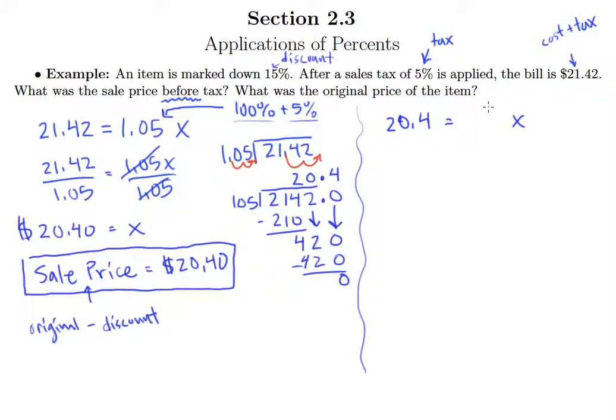The way we do that is take 100% minus 15%, giving us 85%, which we, of course, write as 0.85. So similar problem to what we had over on the other side.